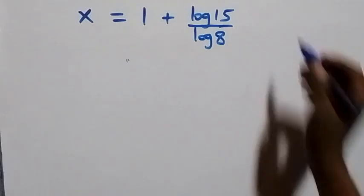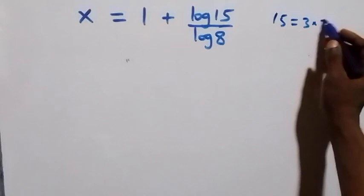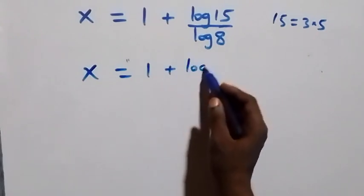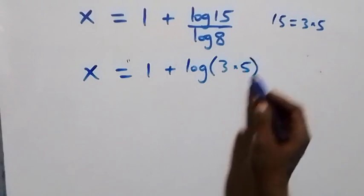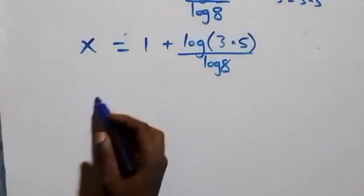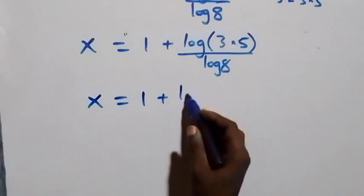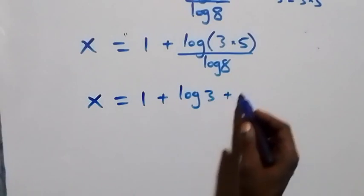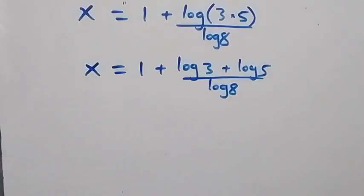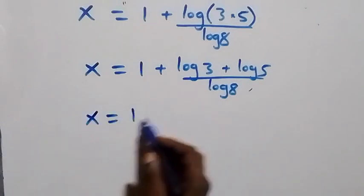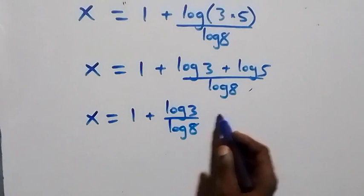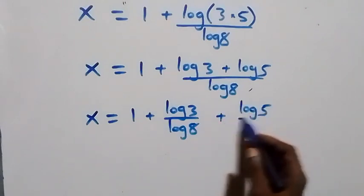We can rewrite 15 as 3 times 5, so x equals 1 plus log(3 × 5) over log 8. Applying the product law again gives x equals 1 plus (log 3 + log 5) over log 8. Separating into two fractions: x equals 1 plus log 3 over log 8 plus log 5 over log 8.